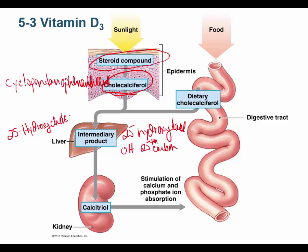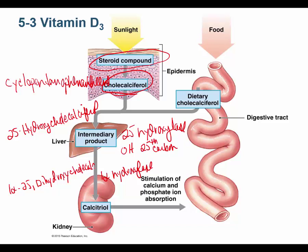25-hydroxycholecalciferol goes to the kidneys and encounters another enzyme called 1-alpha hydroxylase. Just as the name implies, 1-alpha hydroxylase adds a hydroxyl group to the 1-alpha position. Now what I have is 1-alpha 25-dihydroxycholecalciferol — 'dihydroxy' because of the 1-alpha hydroxyl group and the 25 hydroxyl group. That is active vitamin D.